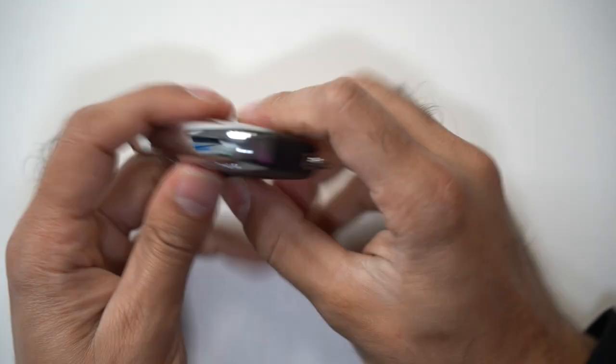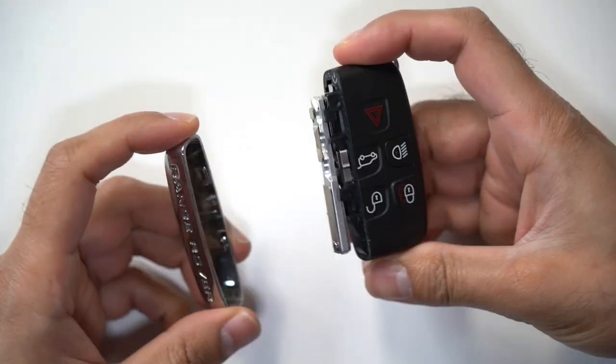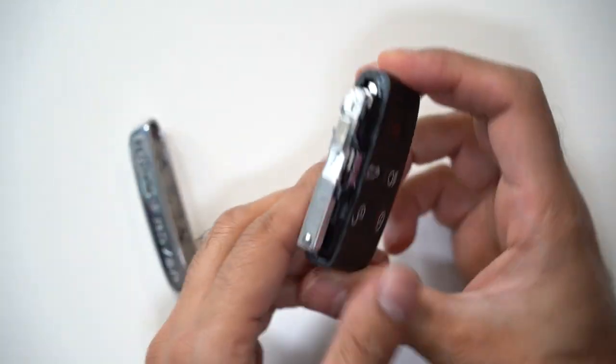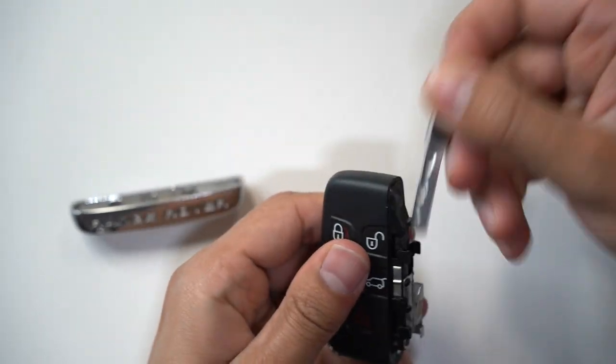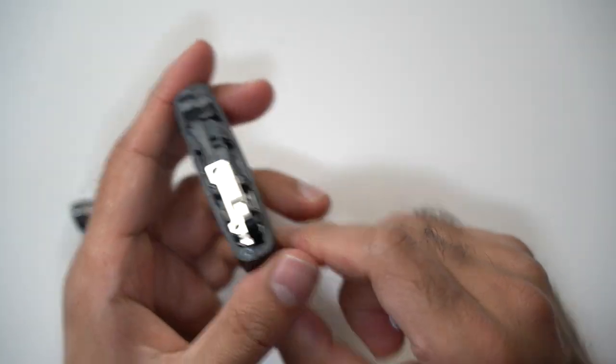You grab your key and push the silver part out so you can get the manual key from inside. There you go, you just take that out. Then what you'll see is there's a little slot here.